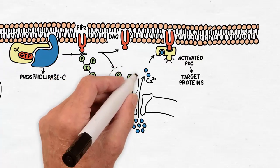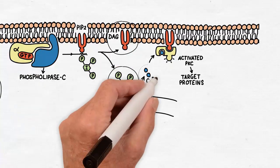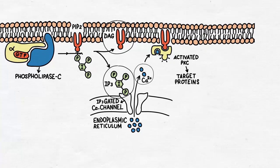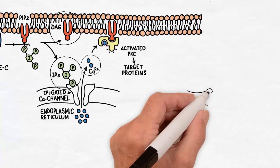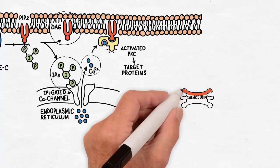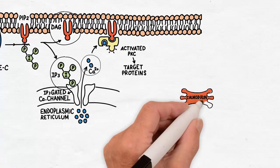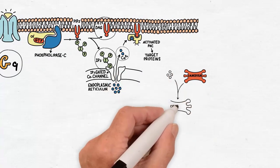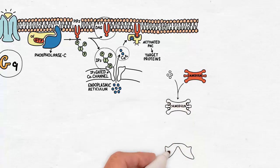IP3, DAG and calcium are all second messengers in this system. The intracellular calcium effects are mediated by a calcium-binding protein called calmodulin. Upon calcium release from the endoplasmic reticulum, the transient increase in intracellular calcium concentration favors formation of the calmodulin calcium complex, which binds to the inactive enzyme, making it active.